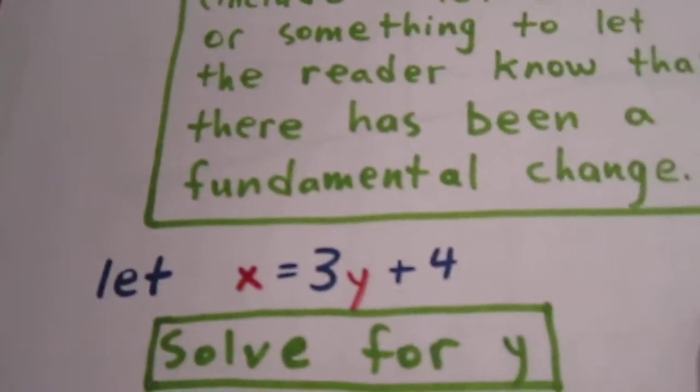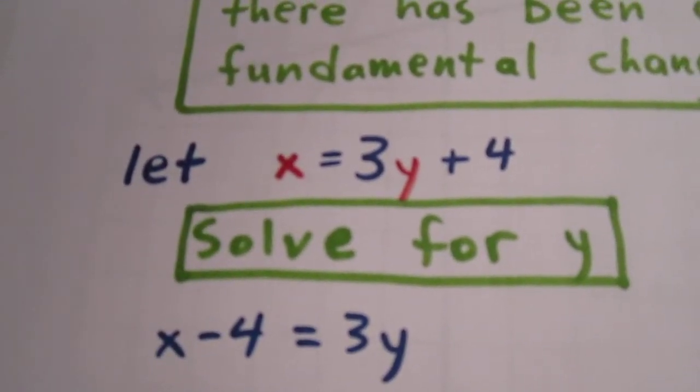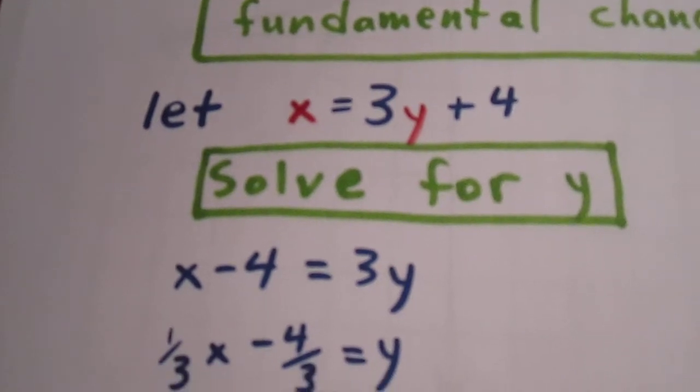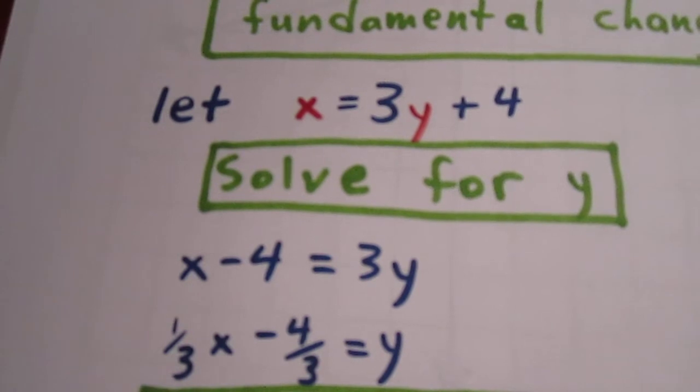Now we solve for y. Well, this involves, it's important that we do our order of operations in the correct manner. x minus 4 equals 3y. Divide both sides by 3, and we get 1 third x minus 4 thirds equals y.